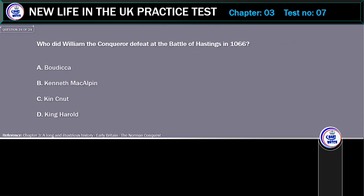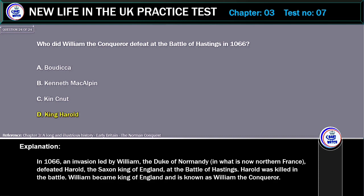Who did William the Conqueror defeat at the Battle of Hastings in 1066? A. Boudicca. B. Kenneth McAlpin. C. King Cnut. D. King Harold. Correct answer: King Harold. Explanation: In 1066, an invasion led by William, the Duke of Normandy, in what is now northern France, defeated Harold, the Saxon King of England, at the Battle of Hastings. Harold was killed in the battle. William became King of England and is known as William the Conqueror.